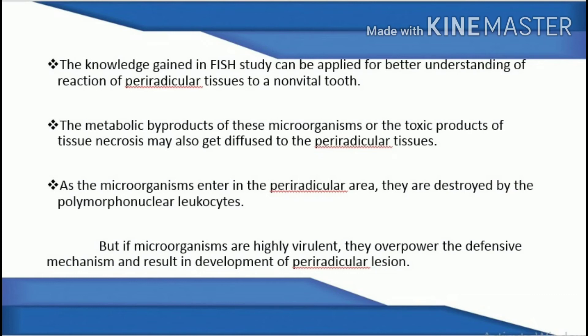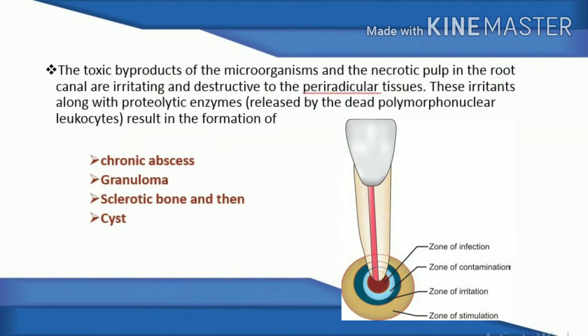The knowledge gained from Fish's study can be applied for better understanding of the reaction of periradicular tissues to a non-vital tooth. Metabolic byproducts of microorganisms and toxic products of tissue necrosis may diffuse to periradicular tissues. As microorganisms enter the periradicular area, they are destroyed by polymorphonuclear leukocytes. However, if microorganisms are highly virulent, they overpower the defensive mechanism, resulting in development of a periradicular lesion and formation of chronic abscess, granuloma, sclerotic bone, and cyst.